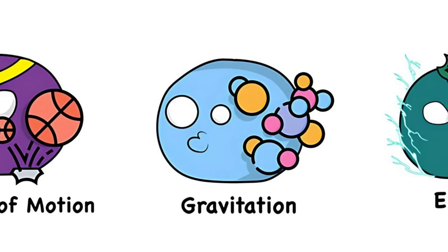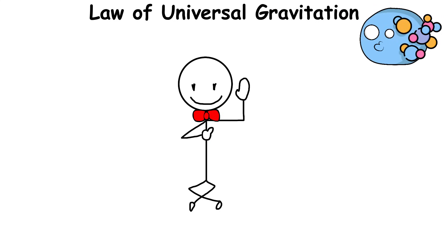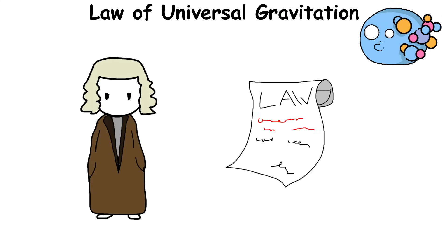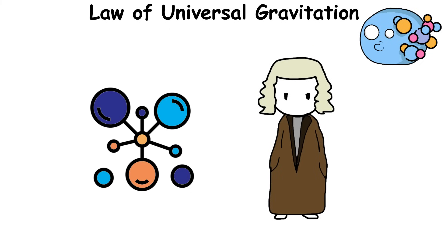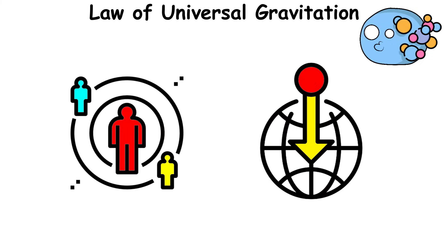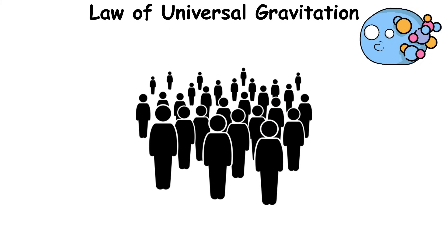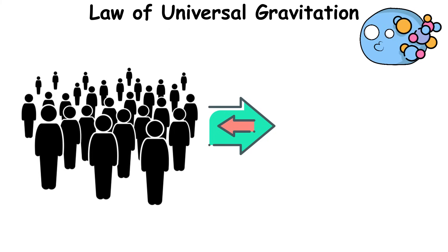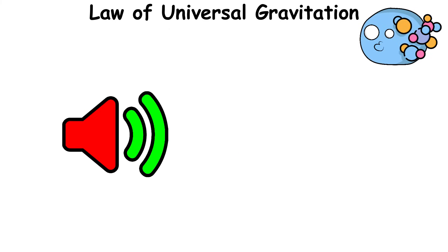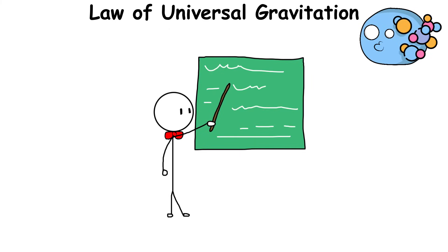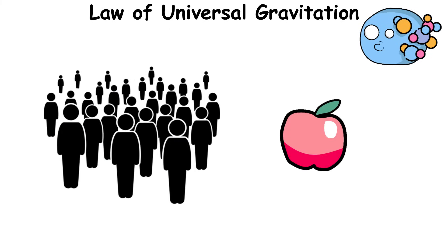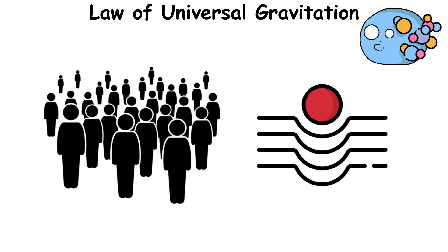The Law of Universal Gravitation. I promise, this is the last Newton's law. According to Newton, any particle of matter in the universe attracts any other, with a force varying directly as the product of the masses and inversely as the square of the distance between them. It sounds like a mouthful, but it simply states that an object with a greater mass produces a stronger gravitational force.